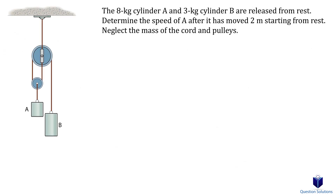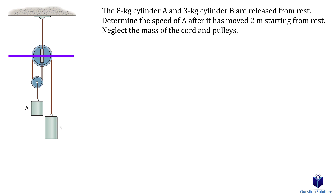Let's take a look at the question involving pulleys. We need to find the speed of cylinder A after it moved 2 meters from rest. As with pretty much every pulley problem, the first step is to draw a datum — we can place it on the top pulley. Then we draw position coordinates SA and SB. Looking at the diagram, it's one single cable, so we only need one equation.